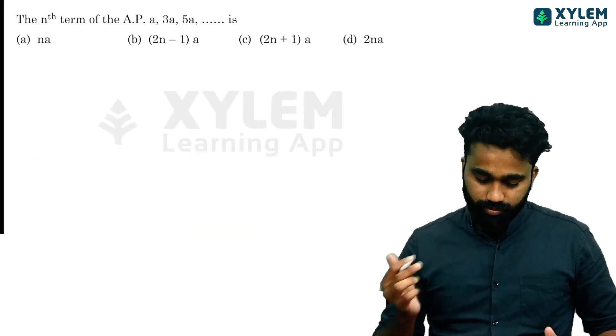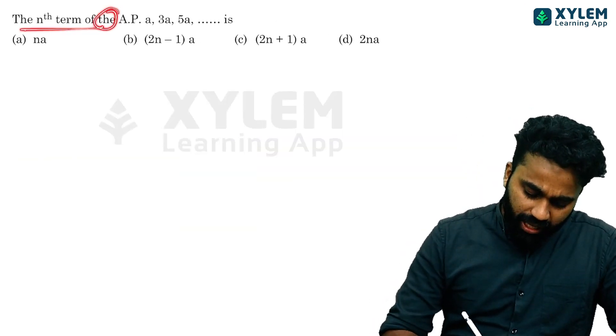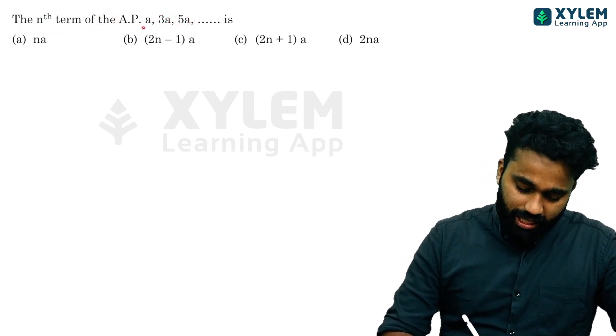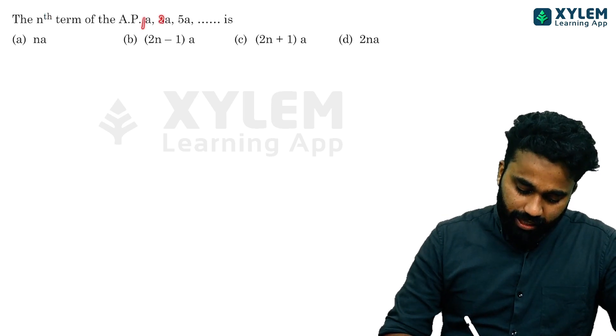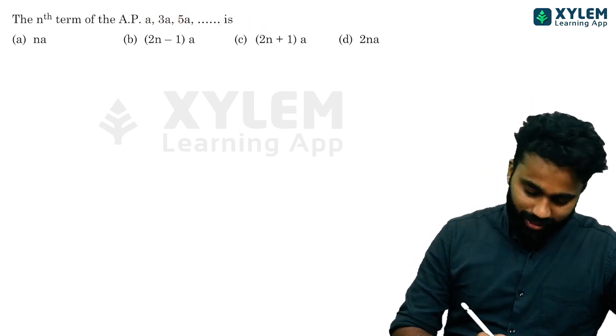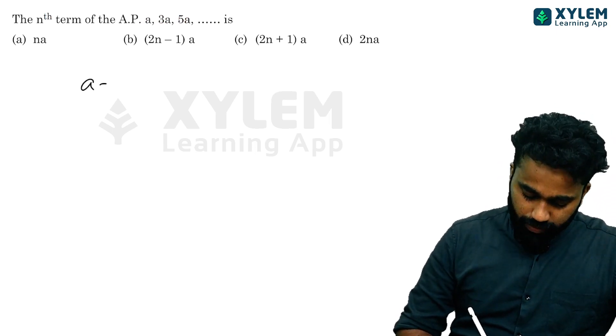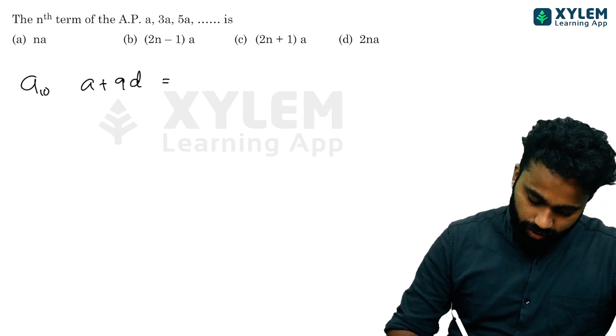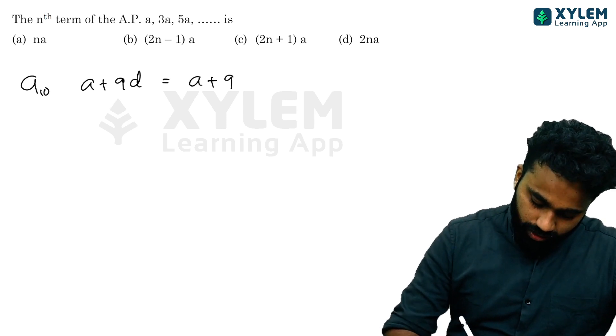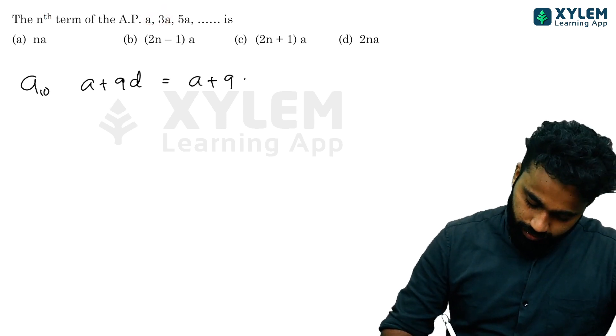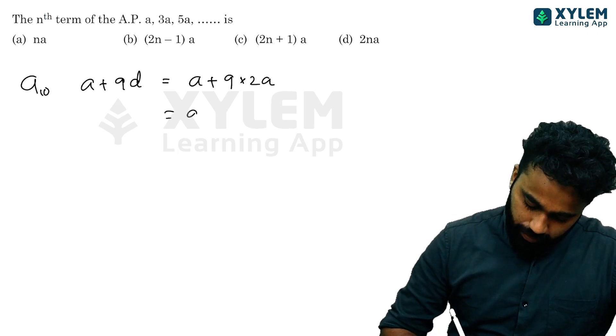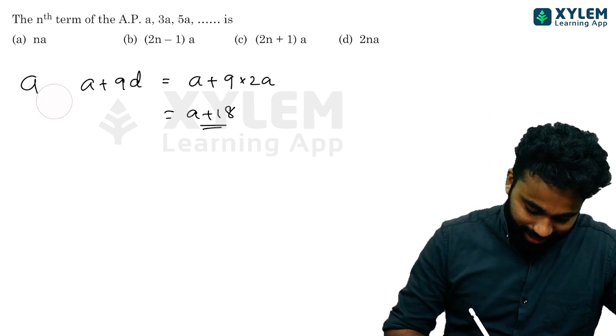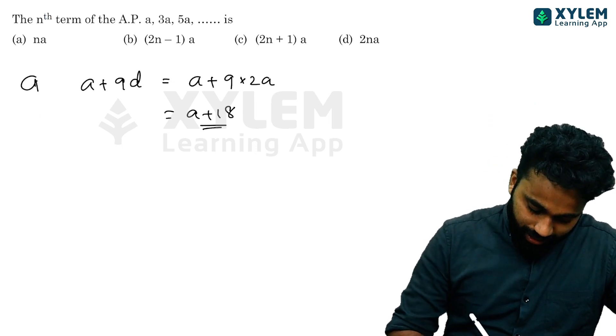The nth term of an AP: a, 3a, 5a. First term is a, second term is 3a, third term is 5a. For the 10th term, a₁₀ equals a plus 9d. Since d equals 3a minus a equals 2a, the answer is a plus 18a equals 19a. Wait, 10th term, not nth term.